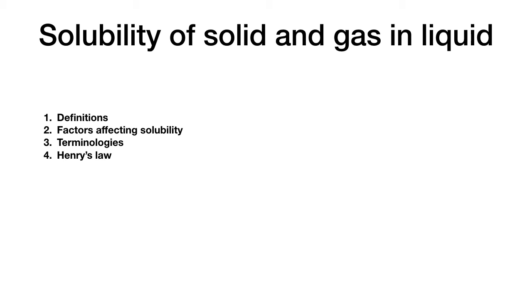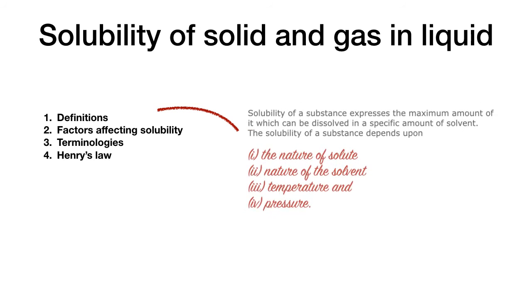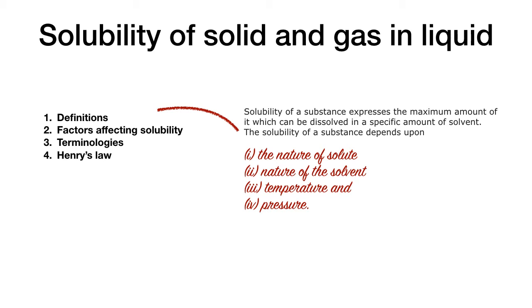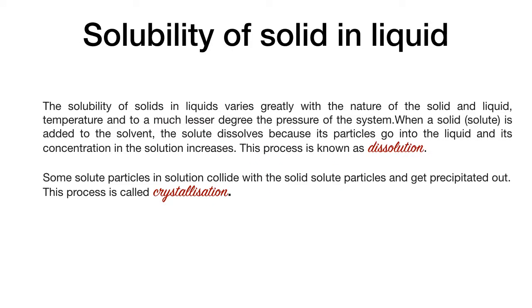Moving to solubility of solid and gas in liquid. Solubility is the maximum amount of substance that can be dissolved in a specific amount of solvent at a specified temperature. Factors affecting solubility are: nature of solute and solvent, temperature, and pressure (pressure affects only gas solubility, not solid or liquid). Solubility of solid in liquid involves an equilibrium between two processes: dissolution, where solid dissolves in liquid, and crystallization, where solid particles come back out of solution.